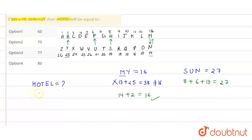Now we will also code HOTEL. H opposite of S has place value 19, plus O opposite of L has place value 12, plus T opposite of G has place value 7, plus E opposite of V has place value 22.